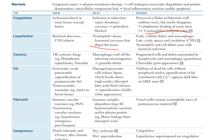Fat necrosis has two morphologies: enzymatic and non-enzymatic. In the enzymatic type, we have acute pancreatitis. In the non-enzymatic traumatic type, we have injury to breast tissue. Fat necrosis occurs because damaged pancreatic cells release lipase, which breaks down triglycerides; liberated fatty acids bind calcium, causing saponification and a chalky white appearance. Histologically, outlines of dead fat cells without peripheral nuclei are seen, and saponification of fat combined with calcium appears dark blue on H&E stain.